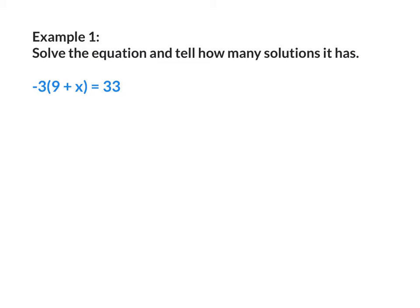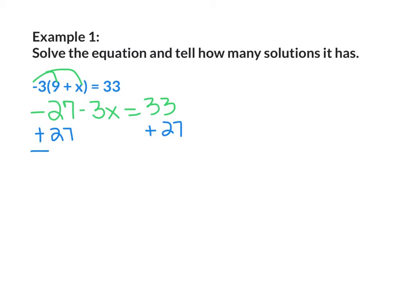Example number 1: solve the equation and tell how many solutions it has. Since negative 3 is in front of the parentheses, it's going to be distributed to the 9 and to the x. So negative 3 times 9 is negative 27, and negative 3 times x is negative 3x. Then we bring down 33. Since negative 27 is a constant on the same side as the variable, we need to move it to the other side by adding 27 to both sides. Negative 27 plus 27 cancels out, leaving negative 3x, and 33 plus 27 gives me 60.